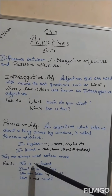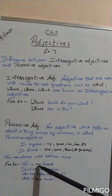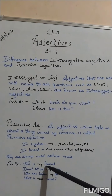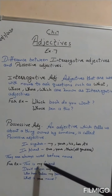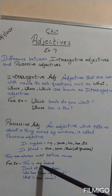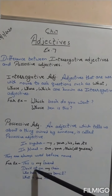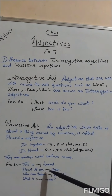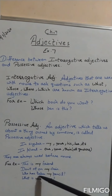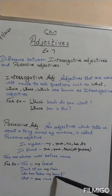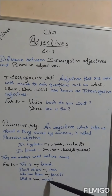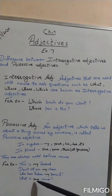यहाँ देखिए, 'friend' नाउन है, और उससे पहले possessive adjective 'my' है. If I say 'This is my friend', it means this friend belongs to me. Similarly, 'Don't sit on my chair' — this chair belongs to me. 'Who has taken my pencil?' — this pencil belongs to me. So 'my' is a possessive adjective. 'What is your name?' — the name belongs to you, so 'your' is the possessive adjective.